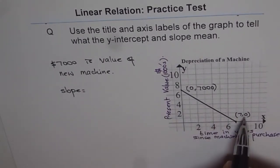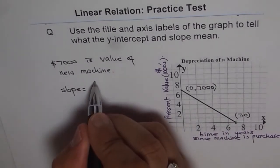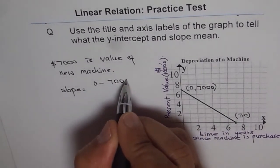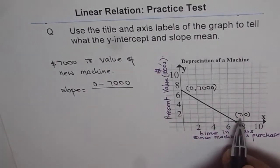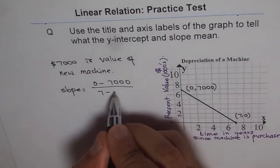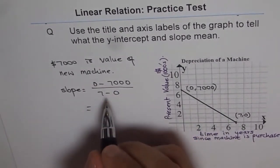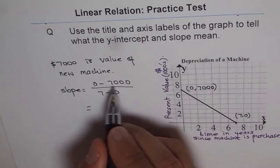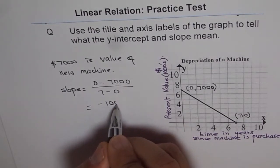Now y2 minus y1 means 0 minus 7,000, so it is 0 minus 7,000 divided by 7 minus 0. So that gives us minus 1,000.